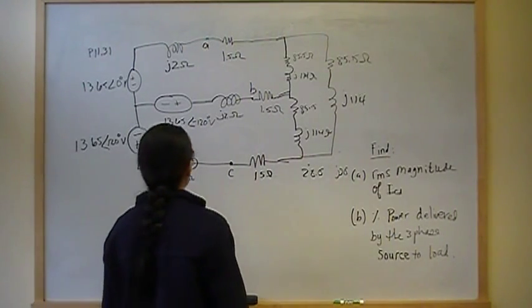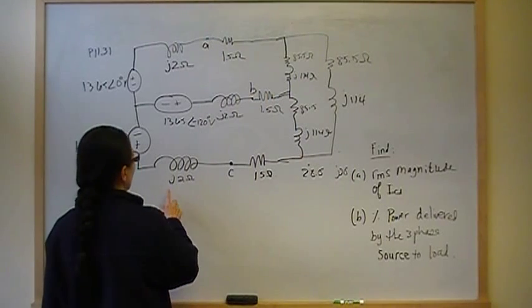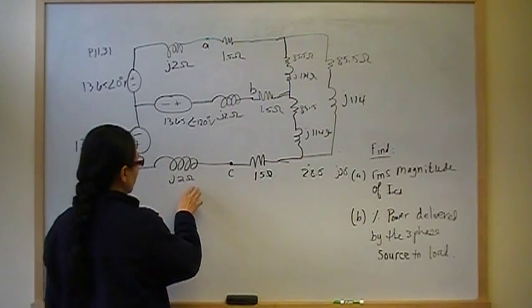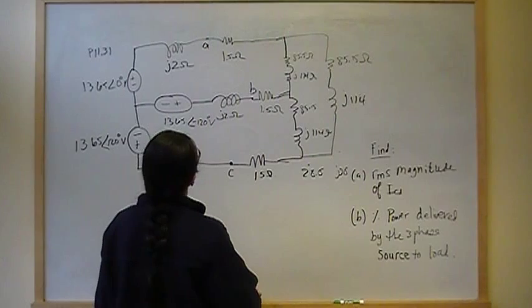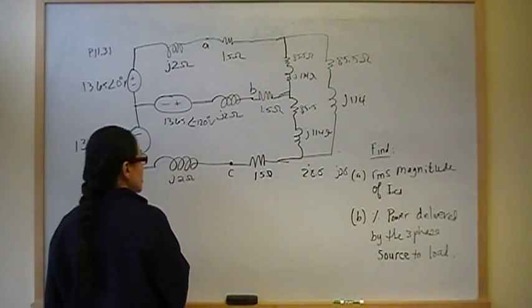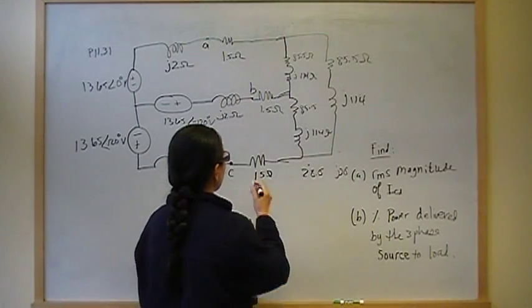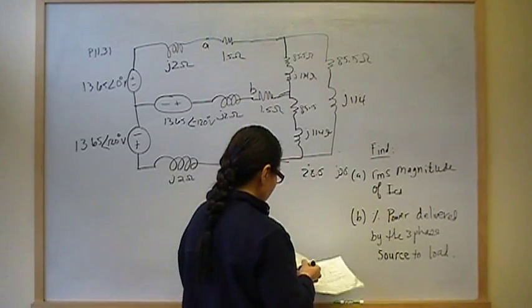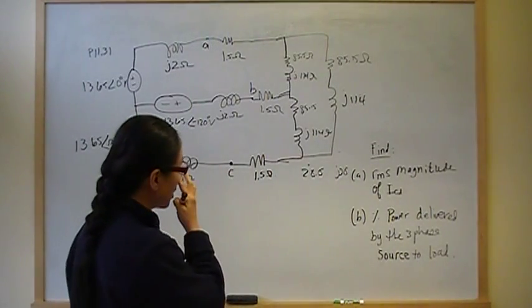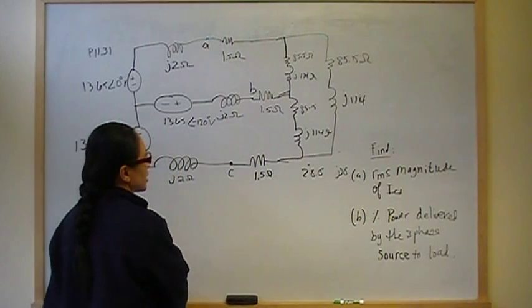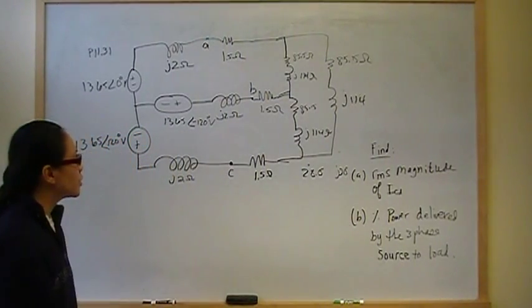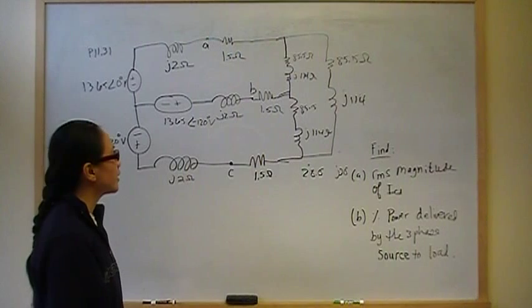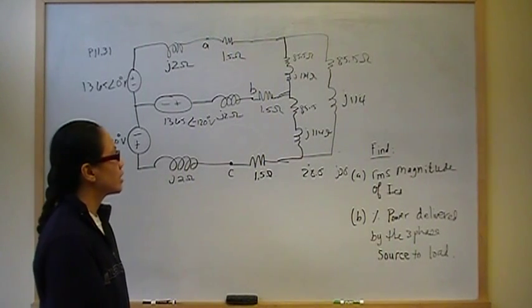And the source has impedance of J2 ohms plus 1.5 ohms. And the load is a delta connected load of 85.5 ohms plus J114 ohms. So the first thing you're going to do is convert the delta connected load into its star connected equivalent.